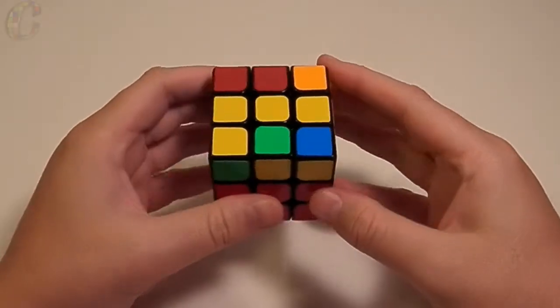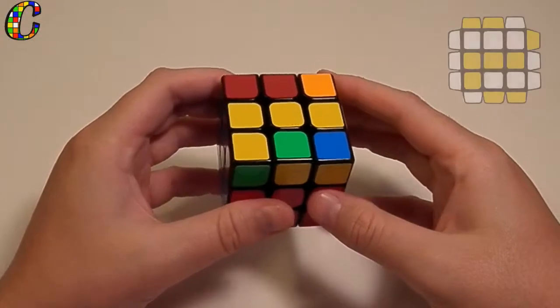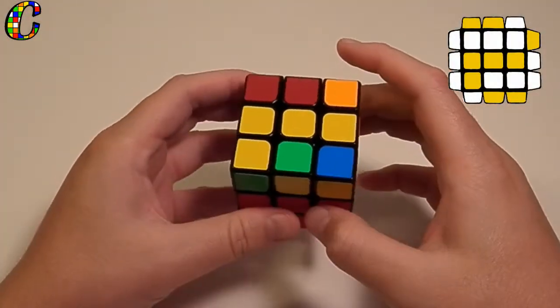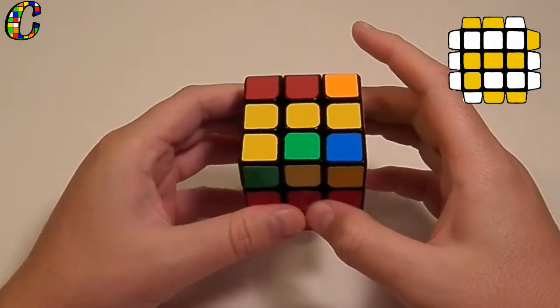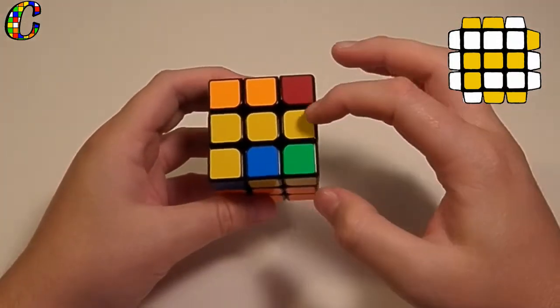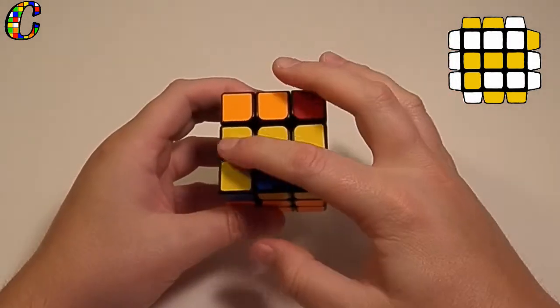Alright guys, today we're going to start off with case number 13. It's another L-shape OLL, and it's a lot like the last ones, but you recognize it a little differently. So when you're trying to recognize this case, you look for the L-shape on this side of the cube